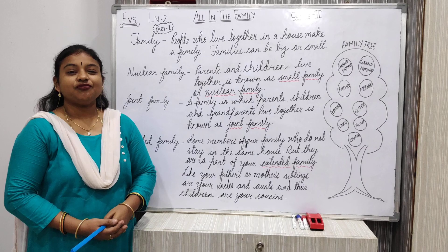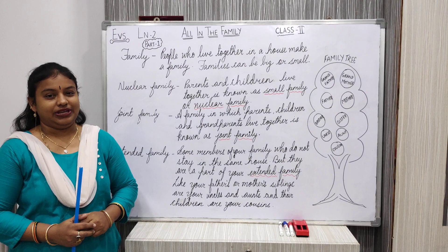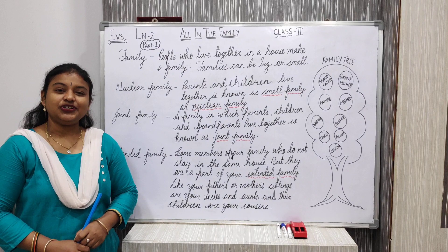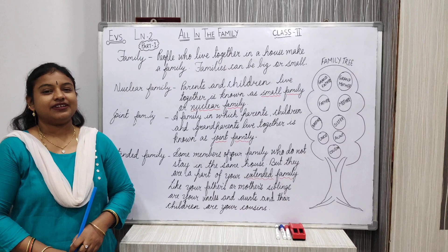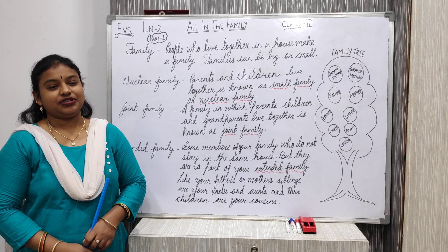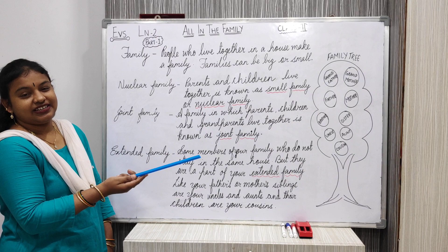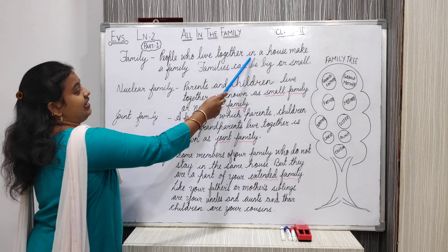Family means we have a big family and a small family. Big family means joint family, and small family means nuclear family — that means parents and the children live together. What do you mean by family? People who live together in a house make a family.